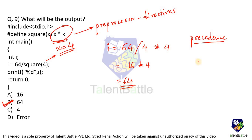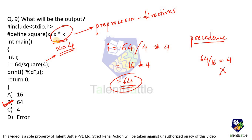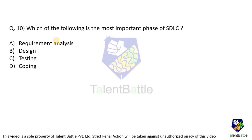If you incorrectly evaluate SQUARE(4) as 16 first, you get 64/16 = 4, which is the wrong answer. Because of precedence, the sequence of execution changes the result. So 64 is correct — option B. Make sure to replace the preprocessor directive exactly as defined and then apply normal operator precedence rules.